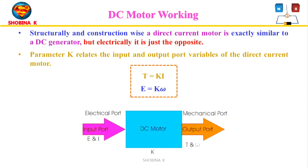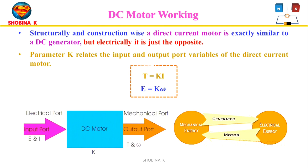Structurally and construction-wise, the DC motor is exactly similar to a DC generator, but electrically it is just opposite: we supply electrical energy to the input port and derive mechanical energy from the output port. The supply voltage E and current I are given to the electrical input port, and from the mechanical output port we derive torque T and speed omega. The parameter K relates the input and output port variables: T = KI and E = K·omega. Motoring and generating operation can be derived from the same machine by simply reversing the ports.